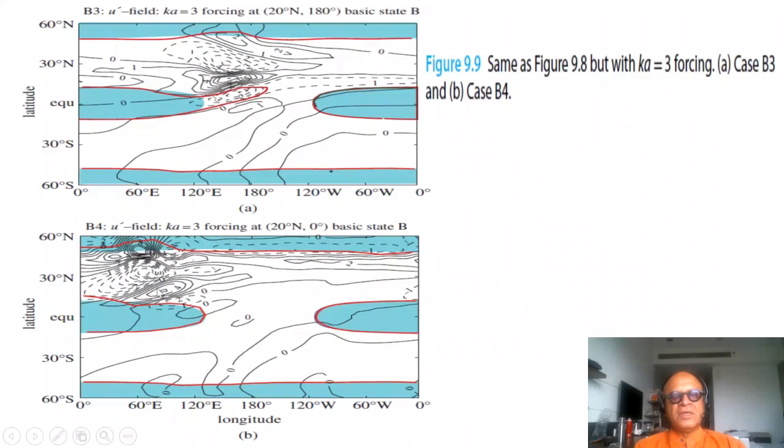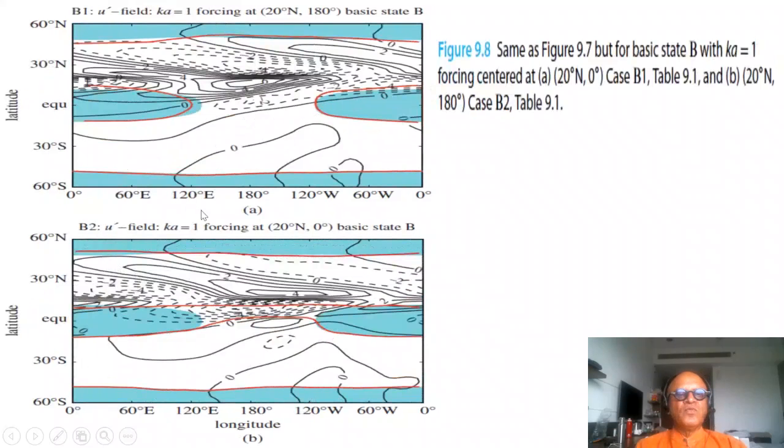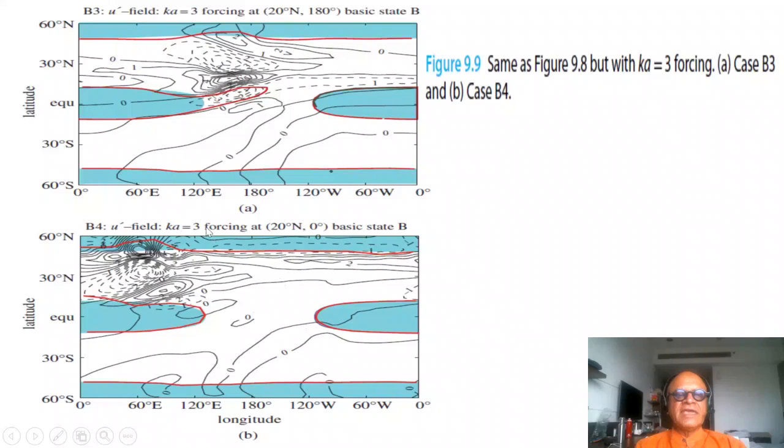This is basically dying away by the time you reach past the easterly basic state. So you can see the difference here. With this length scale you got the forcing going from zero degrees all the way down into the westerly duct. For k equal 3, that's not the case. The message is still the same.